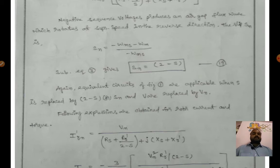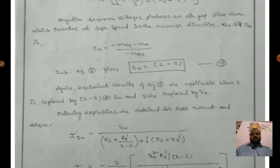For negative sequence, the flux wave rotates at synchronous speed in the reverse direction. The negative sequence slip sn = (−ωms − ωm) / (−ωms). Substituting, we finally get sn = 2 − s.